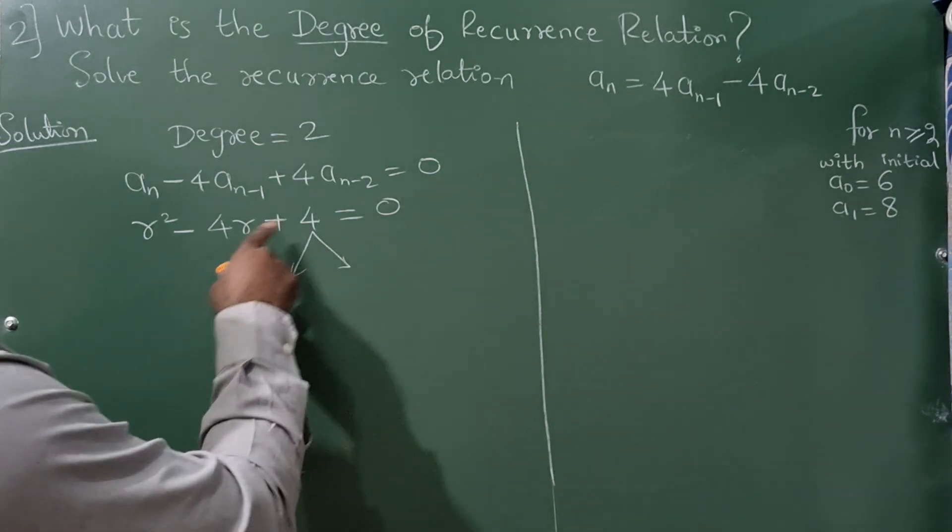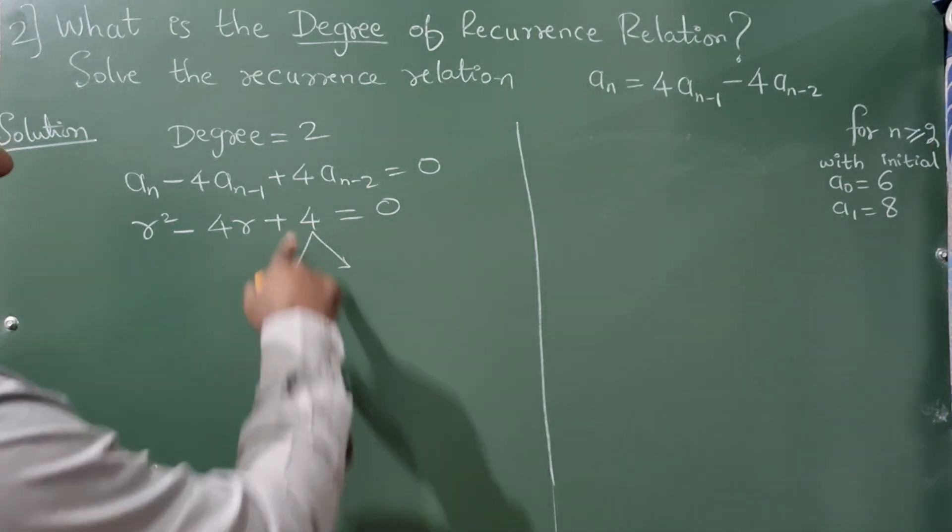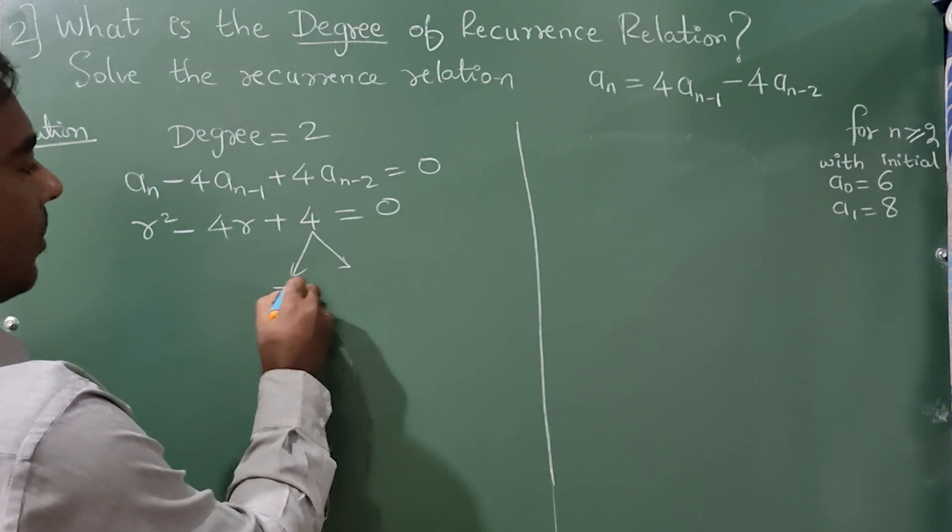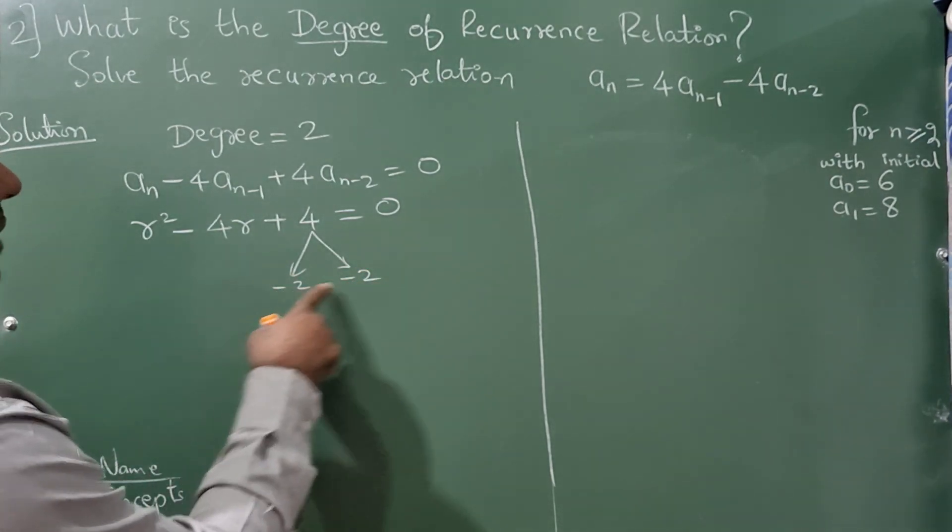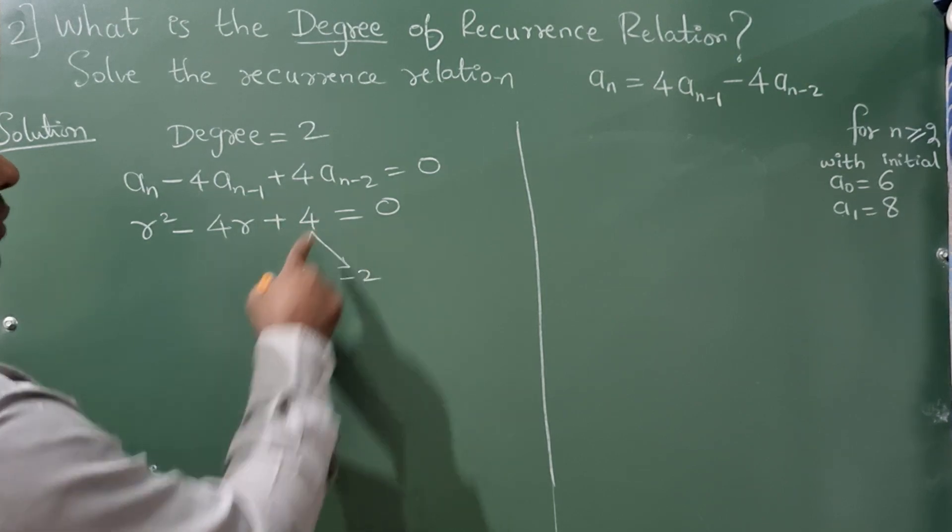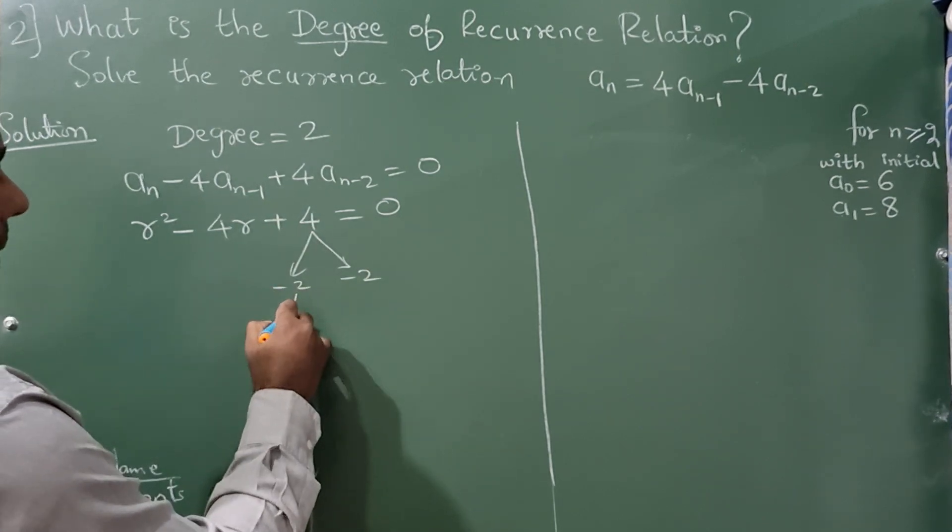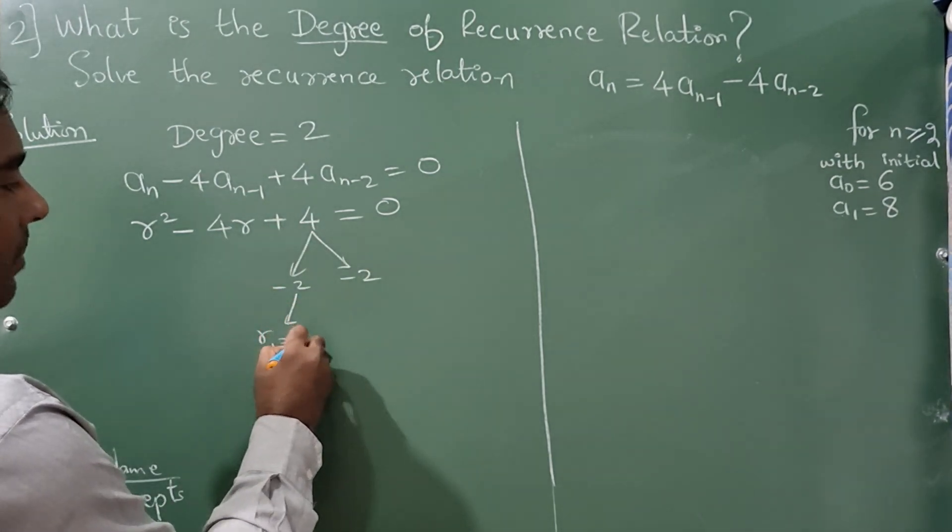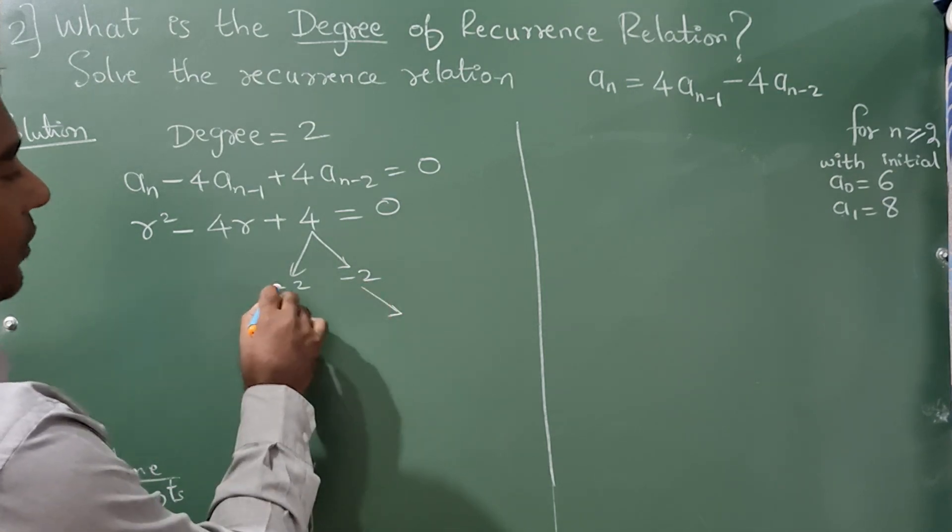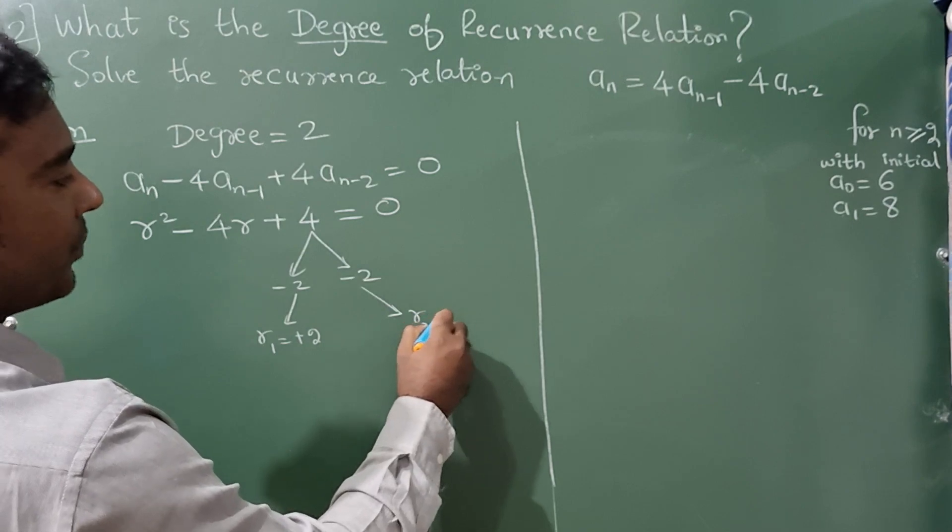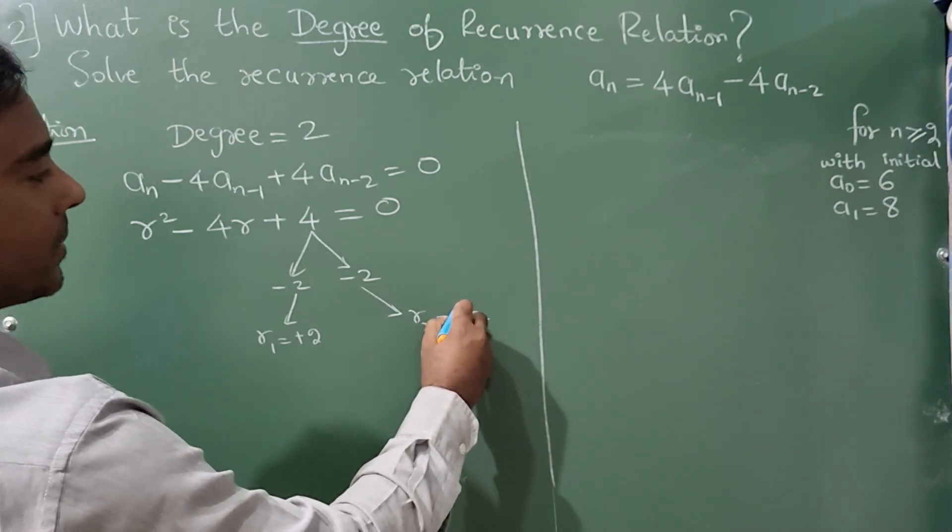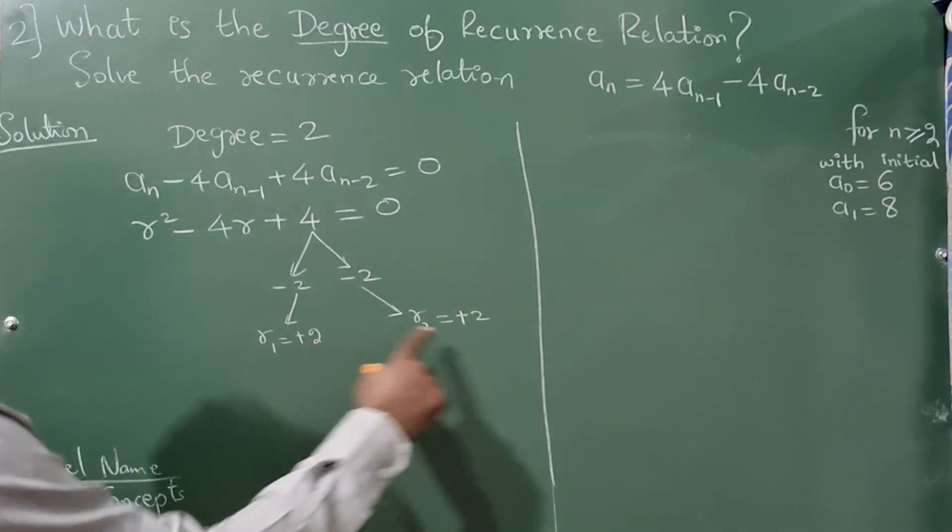You have to find characteristic roots either by calculator or by factorizing this. So (r-2)(r-2), minus 2 times minus 2 will become minus 4, minus into minus is plus, 2×2 is 4. Since this is minus 2, r₁ will become plus 2, we have to reverse the sign minus 2, so r₂ = +2.